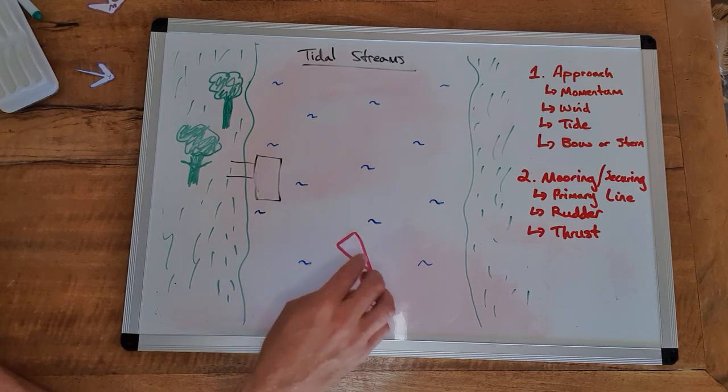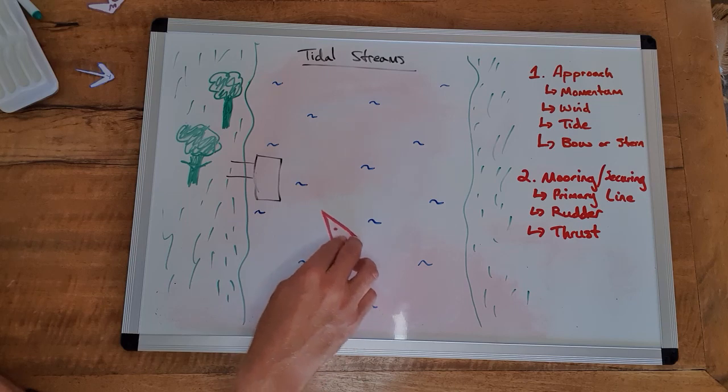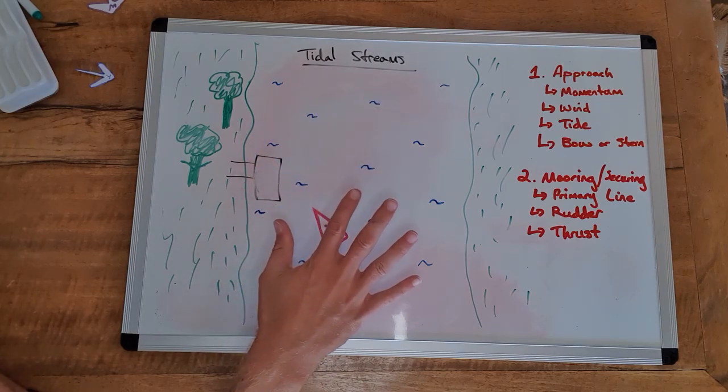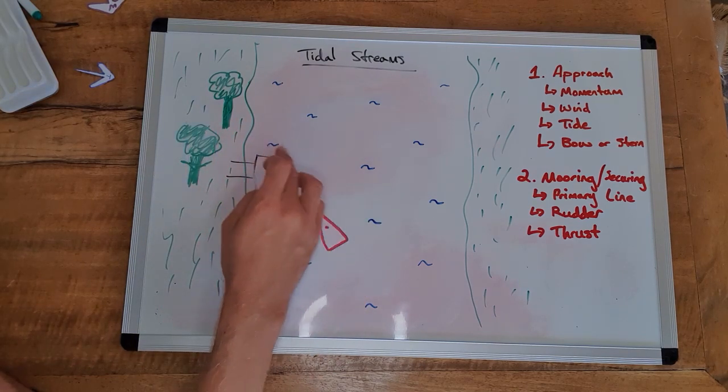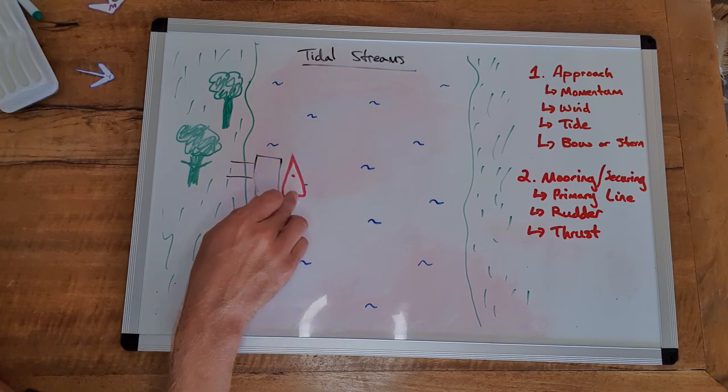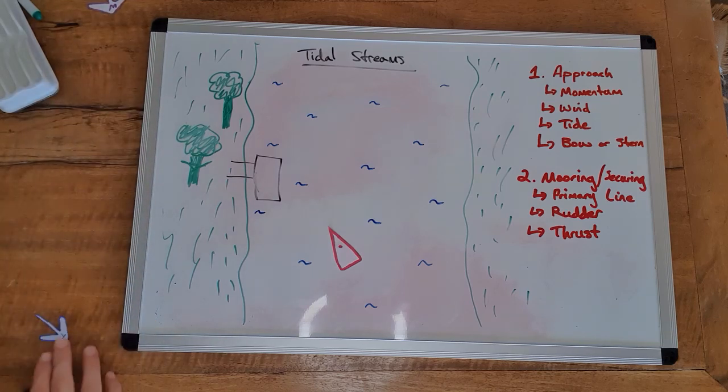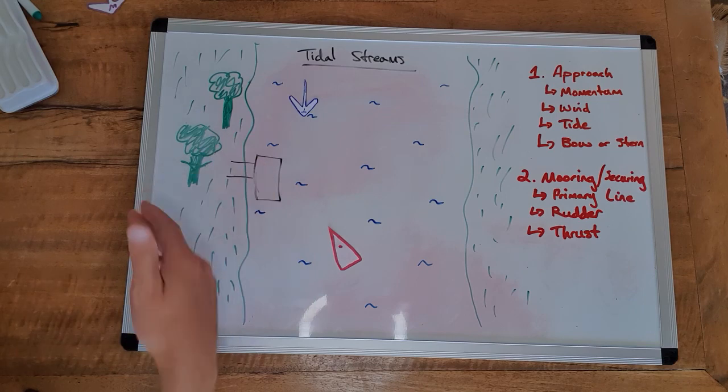So whether we're coming in bow first or stern first, we'd be moving relative to the water which is relatively still if it had no tidal effect, and we'd also be moving relative to the dock that we're coming along. So with tide, if we apply tide in a space like this and say the tide's going this way, then what happens is we're presented with some choices.